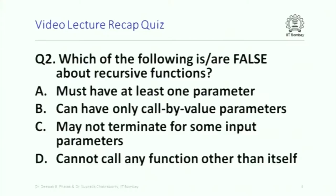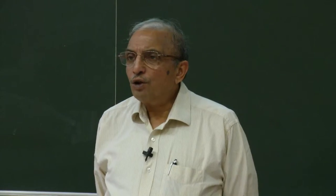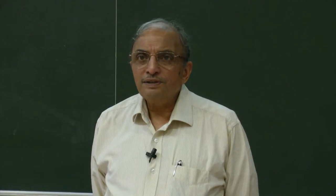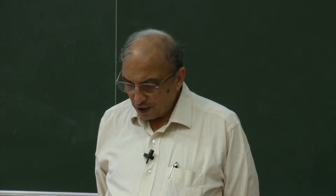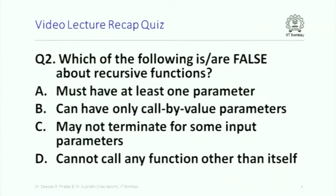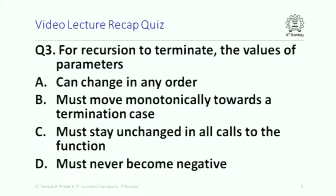Choice B: can have only call-by-value parameters — it can also have call-by-reference parameters, so B is false. Choice C: may not terminate for some input parameters — possible if it is not well-formed. Choice D: cannot call any function other than itself — also false. So the false choices are B and D. I would like during the discussion session for people having different answers to discuss it.